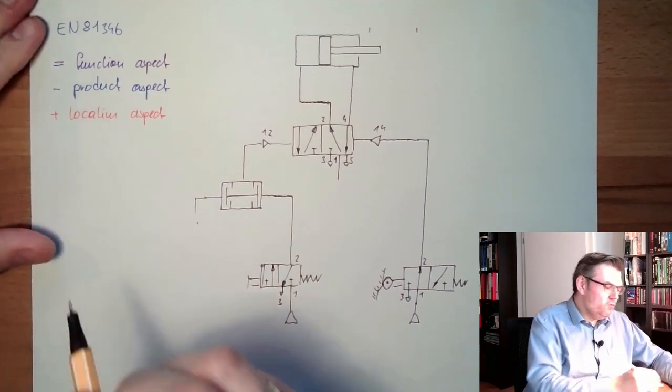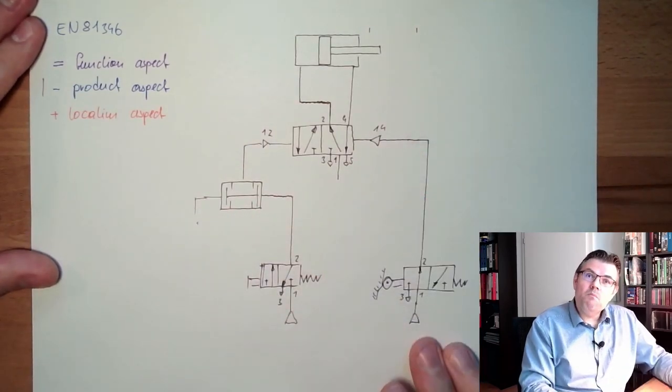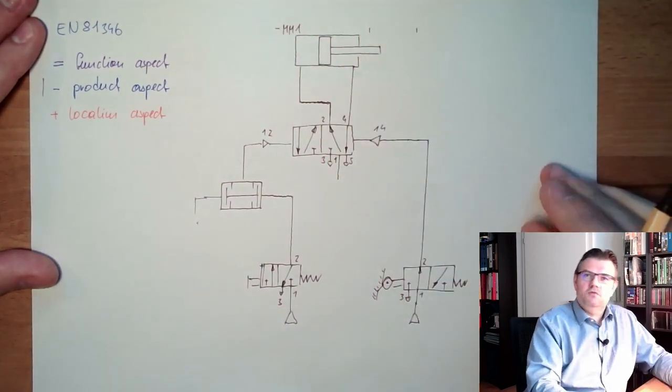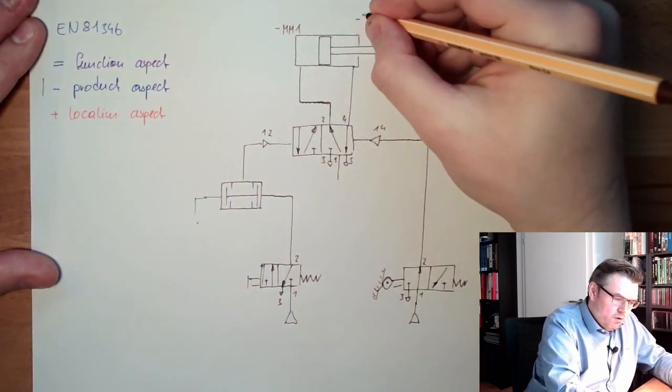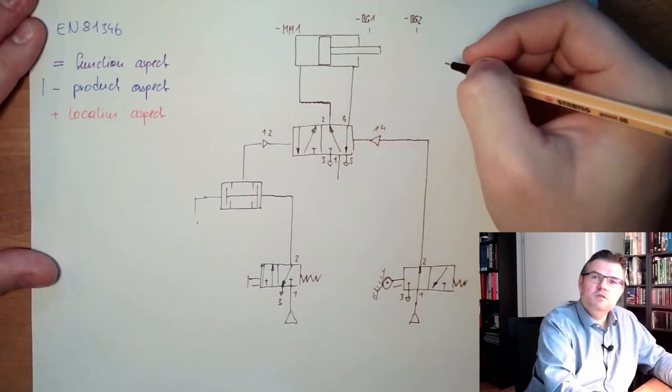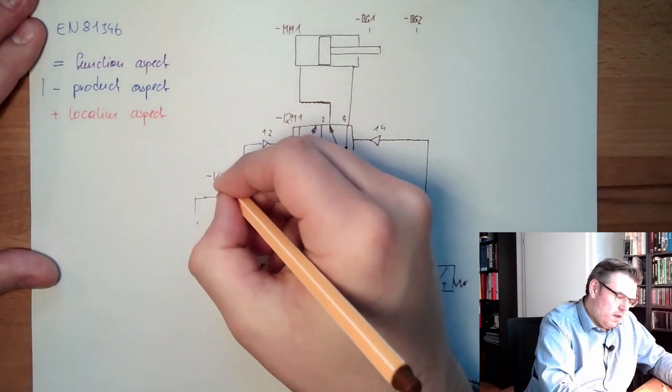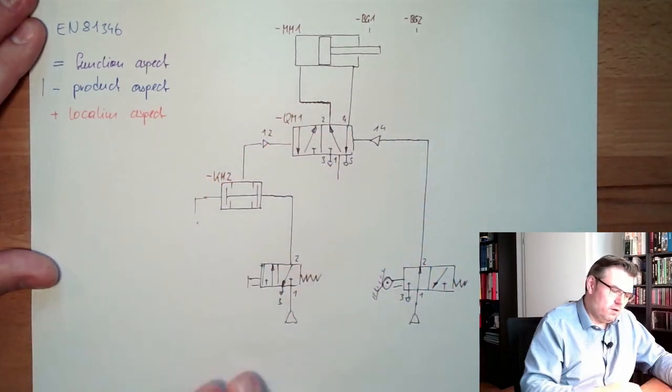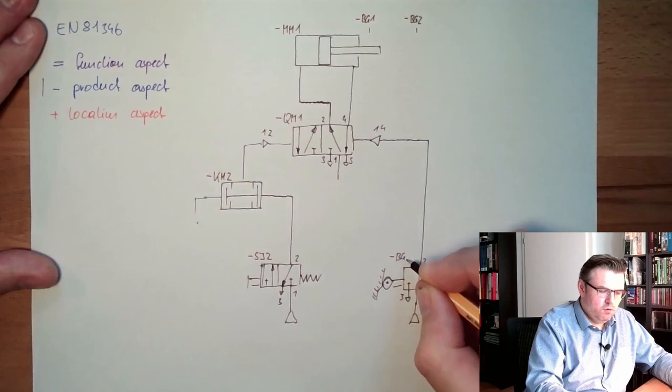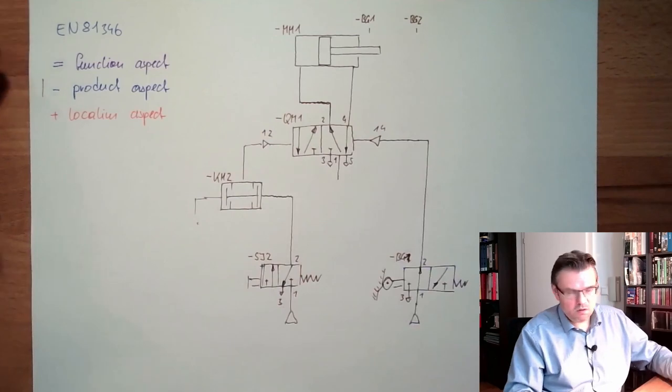We will now start to use the product aspect, so all our names I'm now drawing are starting with a minus sign. This is why I call this now M1, and this here I call BG1, and this here I call BG2, those two limit switches. This here I call QM1, this here I call KH2, this here I call SJ2.